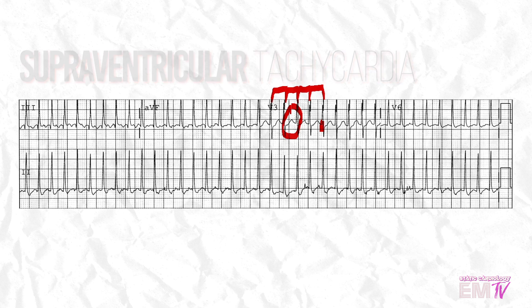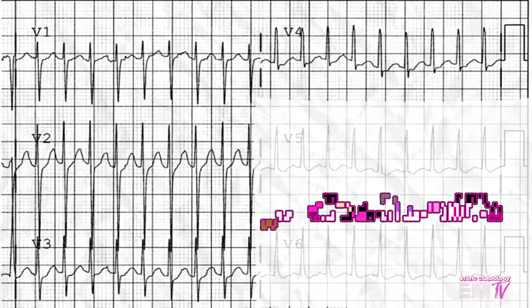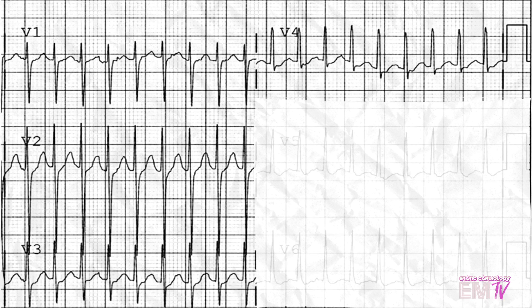Let's go ahead and take a look at some of the other lead groupings to make sure there isn't anything more malignant going on. In my anterior lead grouping, I'm not seeing anything significant except for a little bit of ST-segment depression. But this is easily attributed to a rate-related ischemia due to this patient's significantly elevated heart rate.